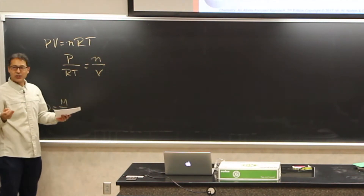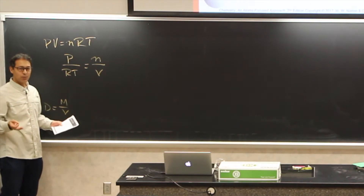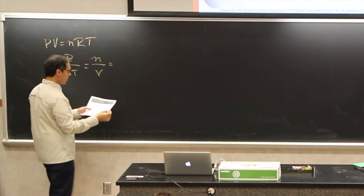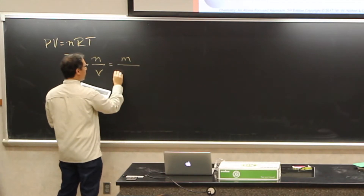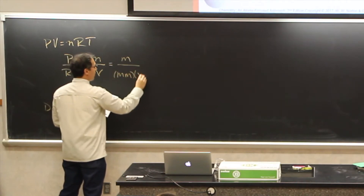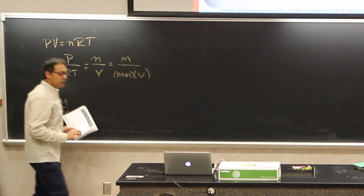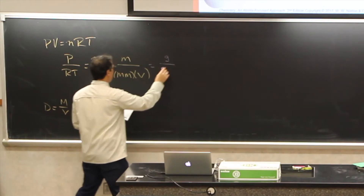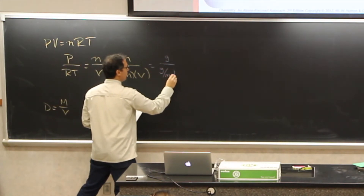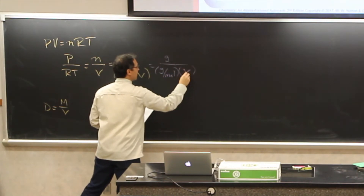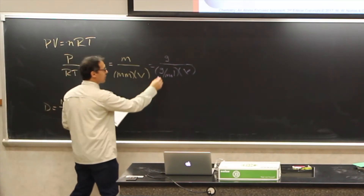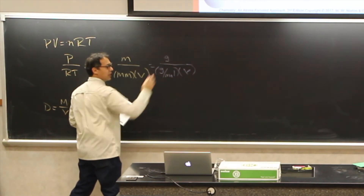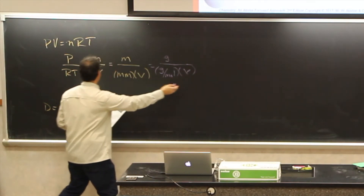We know that moles is somehow related to mass, because that's grams per mole. And so we can say that n over V, that moles over volume, is equal to mass over the molar mass times the volume. If we drop units in for this, mass is in grams, and molar mass is grams per mole, and then we have volume. If we cross units out, the grams cancel, and the moles end up on top, because moles below the line makes it up on top. And so that gives us moles over volume.